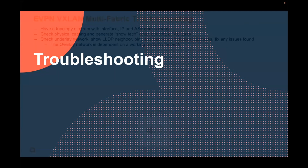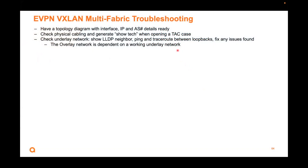For troubleshooting, we recommend you have a topology diagram with your interface IPs and AS numbers ready so you can visualize. Before you troubleshoot any overlay networking, make sure your underlay works. Check your physical cabling, generate a show tech if you're opening a case, check your underlay network, make sure your LDP neighbors are correct, and make sure ping and traceroute between your loopbacks work. The overlay network is really dependent on the underlay network.